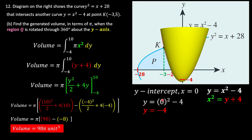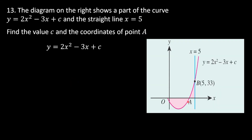A new question: the red curve has equation y = 2x² - 3x + c, where c is the missing y-intercept. We are told that the line x = 5 intersects the curve at point B, so point B satisfies the equation.